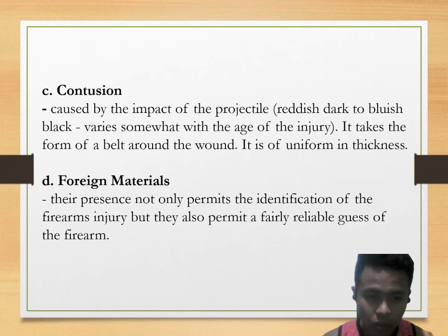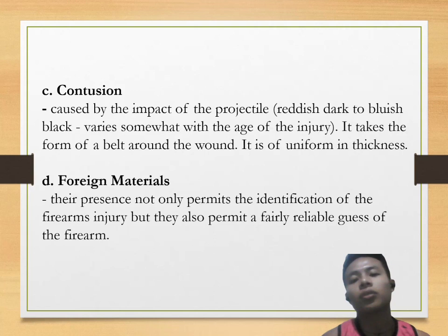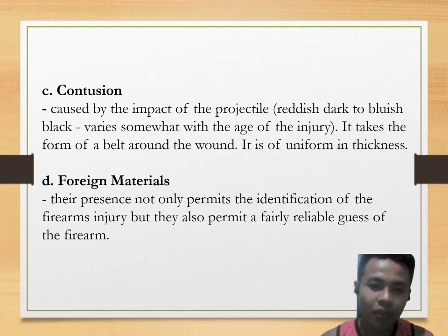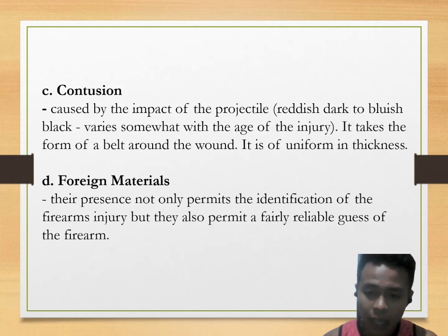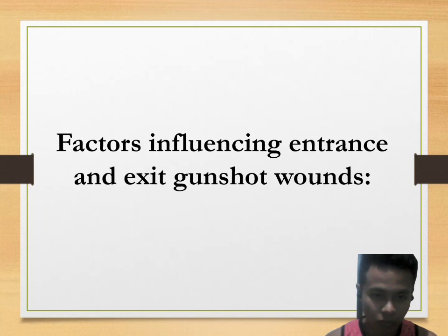Contusion is caused by the impact of the projectile, producing a reddish dark to bluish-black color around the edge of the injury, taking the form of a belt around the wound of uniform thickness. Fire materials — their presence not only permits identification of the firearms injury but also permits a fairly reliable estimate of the range of the firearm.